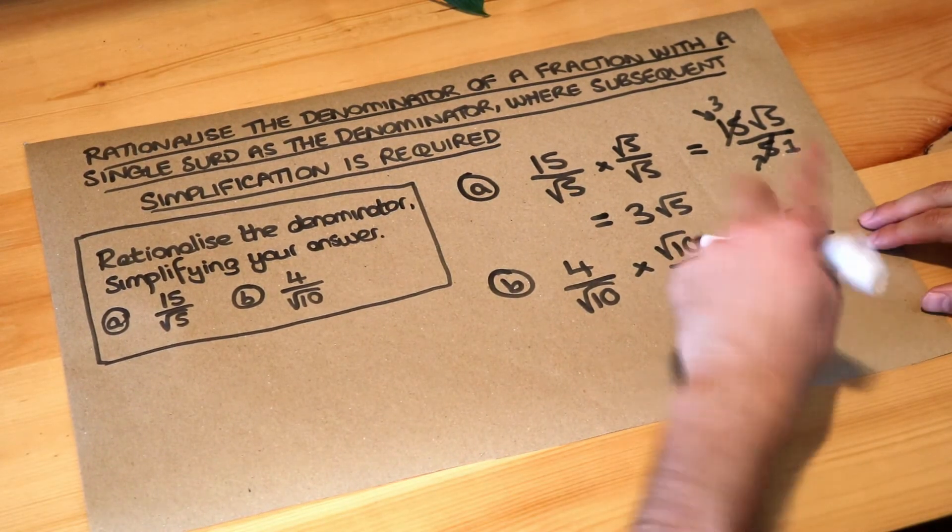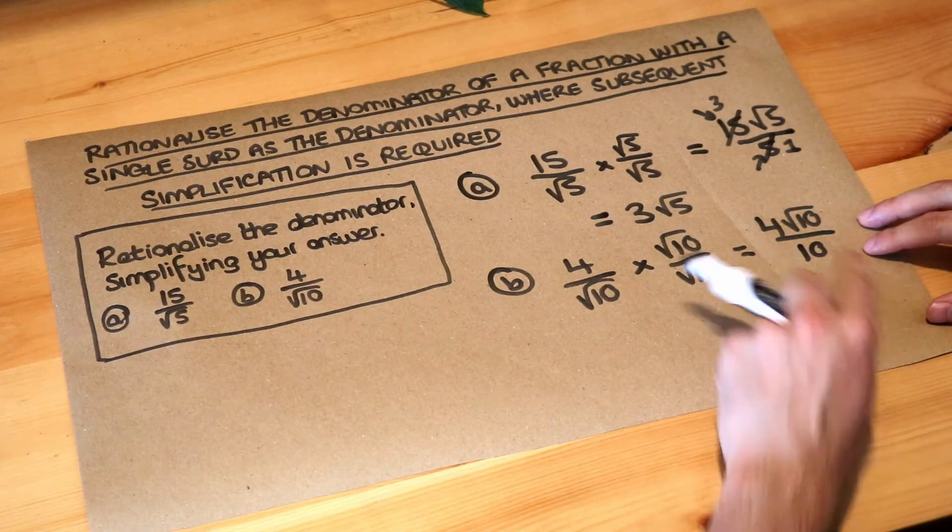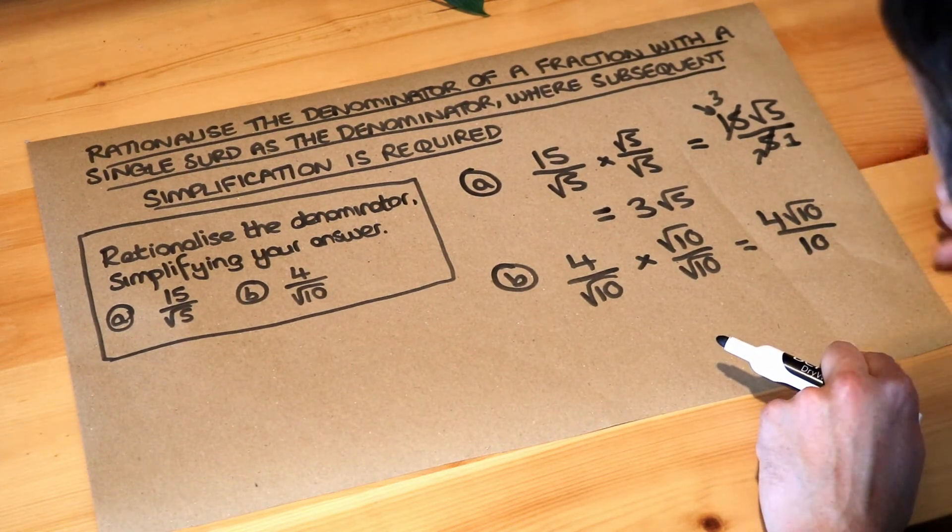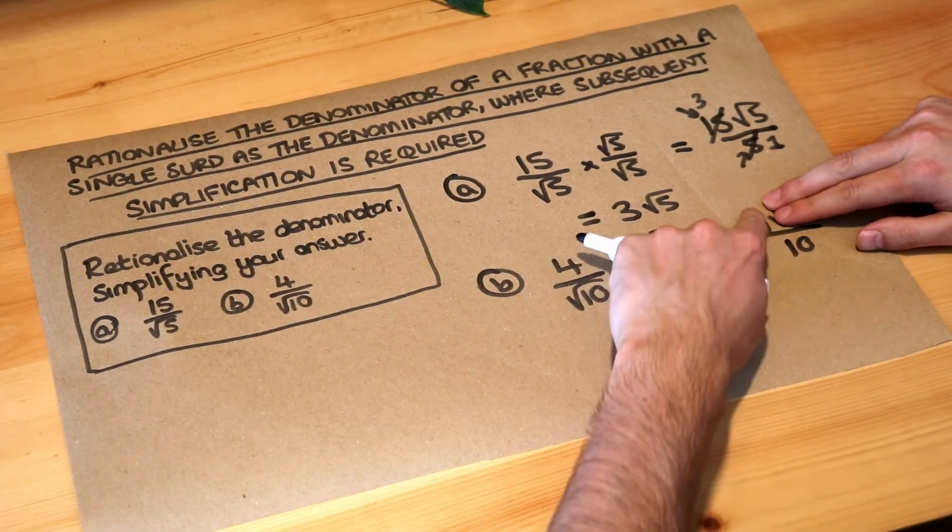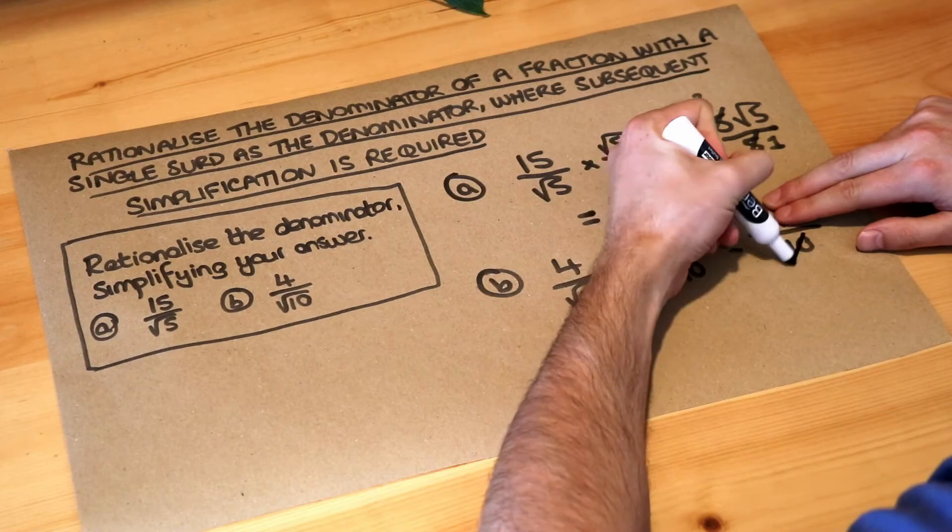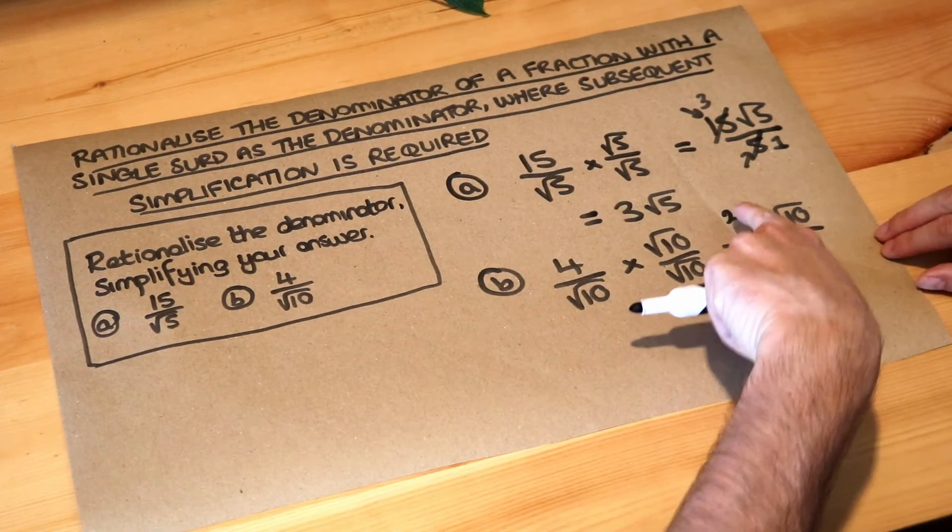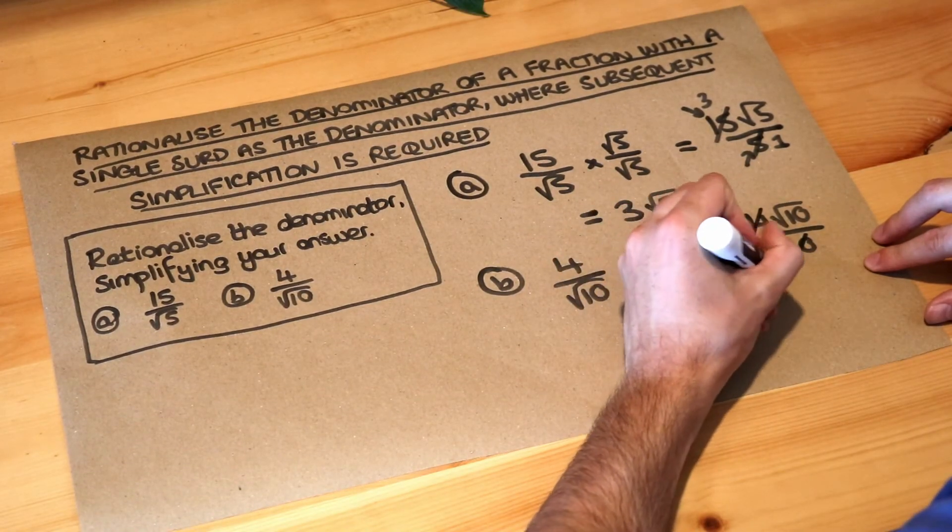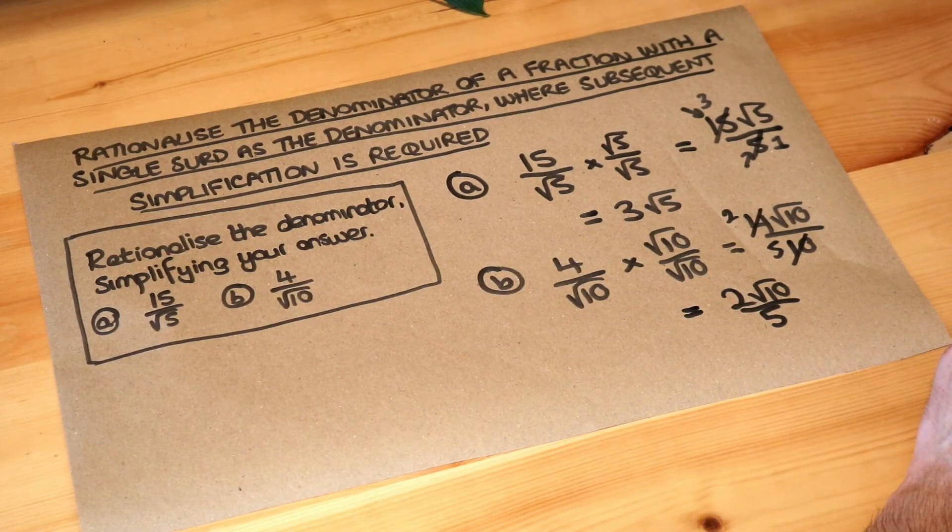Now 4 divided by 10, that doesn't give you a whole number, but we could divide top and bottom of this fraction by whatever's common. Now you've got a surd at the top, you don't have a surd at the bottom, so you can't simplify the root 10. Let's ignore it for the moment. We'll put it back later. But 4 over 10, we could divide them both by 2 to give you 2 over 5. So you're left with 2 root 10 over 5, and that's the final answer. And you can't simplify that any further.